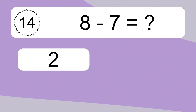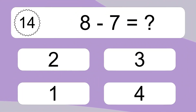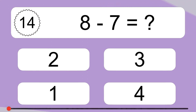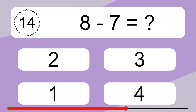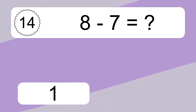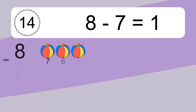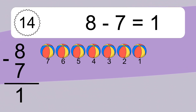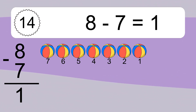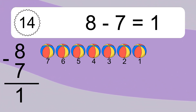8 minus 7 equals what? 8 minus 7 equals 1. Let's count it: 7, 6, 5, 4, 3, 2, 1.